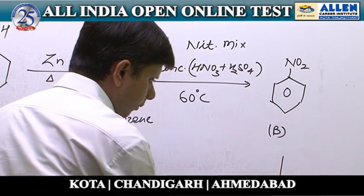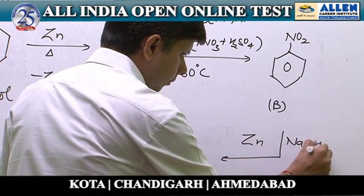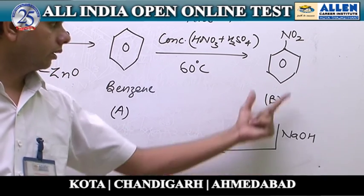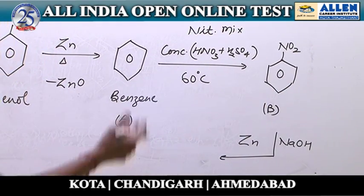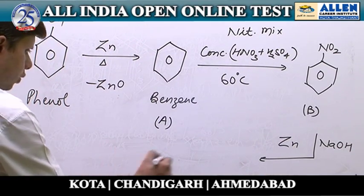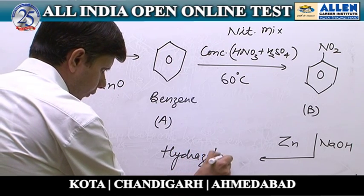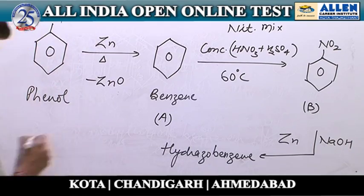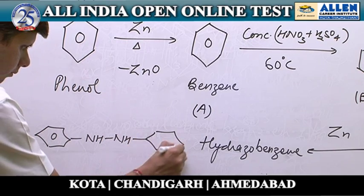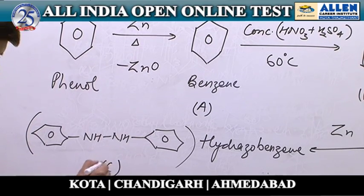Now, product B, that is nitrobenzene, is to be further reacted with zinc in NaOH — metal and alkaline conditions. This involves reduction of the nitro compound. Reduction of nitrobenzene in presence of zinc and NaOH will give hydrazobenzene. The product C is hydrazobenzene.